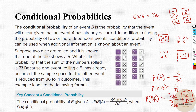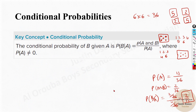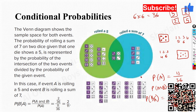If we used traditional methods, it would take a long time — listing all possibilities of rolling a five, all possibilities of a sum of seven, and so on. But using the conditional probability formula, we directly get 2/11, which is much easier.